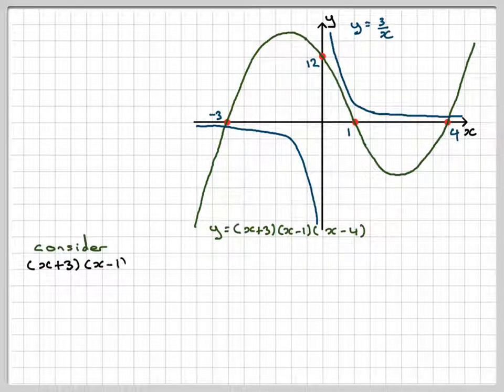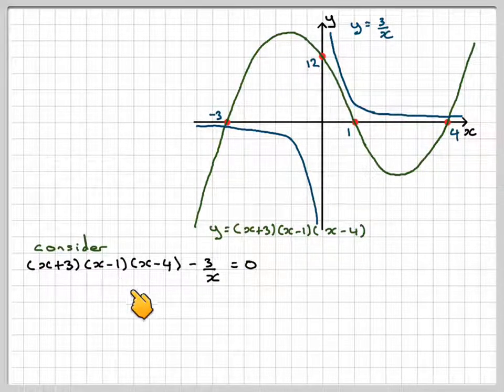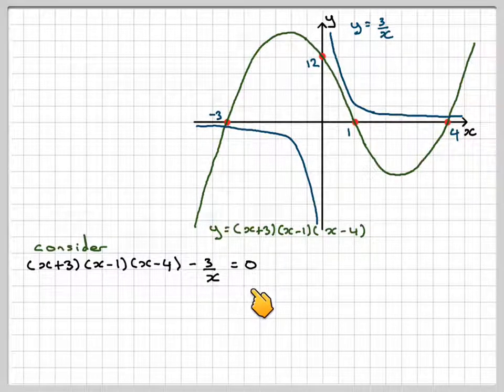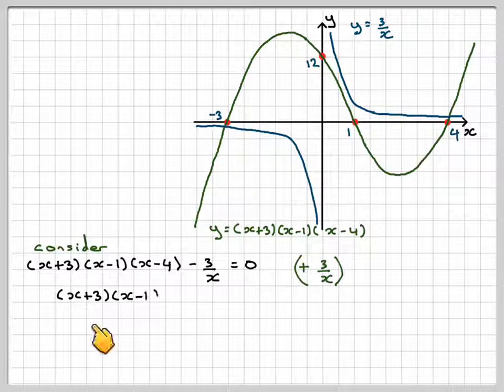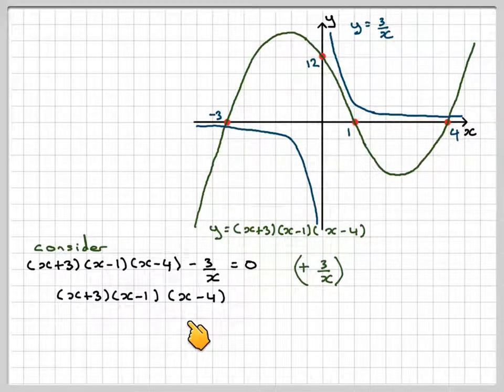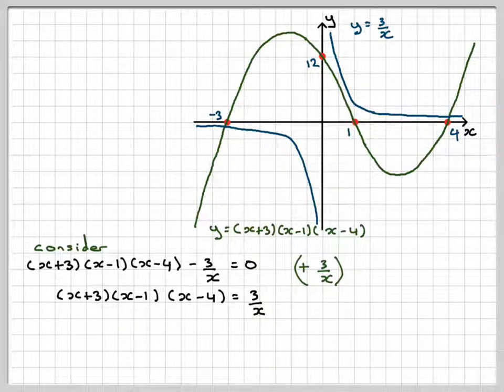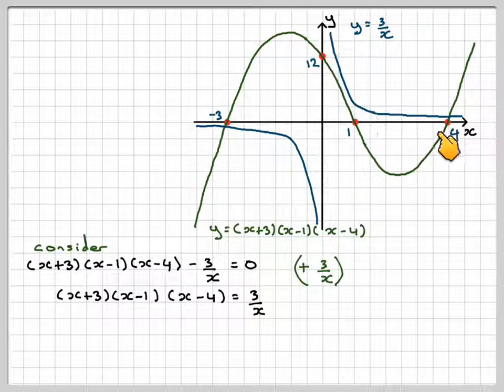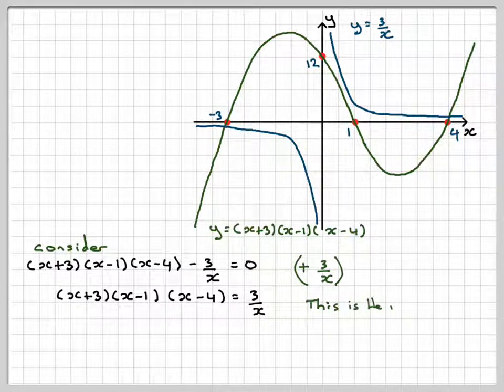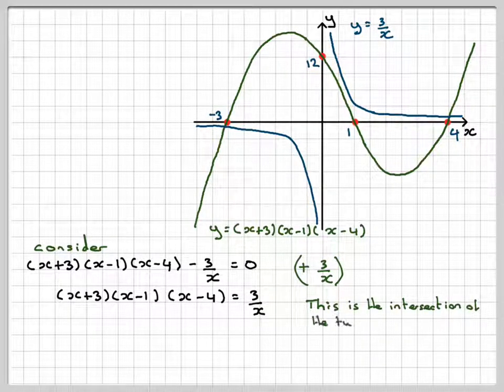Consider x plus 3, x minus 1, x minus 4, minus 3 over x equals 0. If we add 3 over x to both sides, we get x plus 3, x minus 1, x minus 4 equals 3 over x. This is the point of intersection of this curve with this curve. This is the intersection of the two curves.